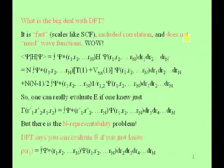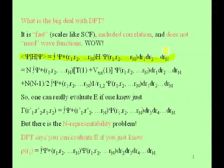Let me express some background material. In wave function language, we calculate an energy as the integral of psi-star H psi. In that expression, we have this psi function which is a function of three N coordinates — the spatial coordinates of all N electrons. So if you have a DNA molecule with 40,000 electrons, this is a function of 120,000 spatial coordinates.